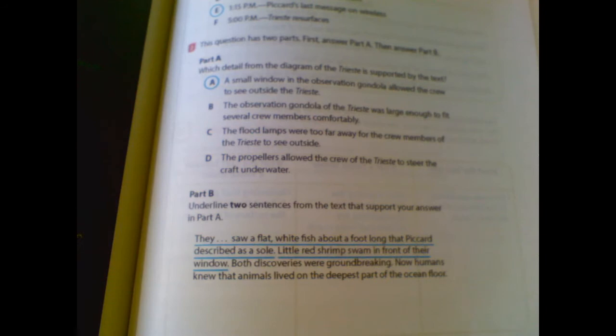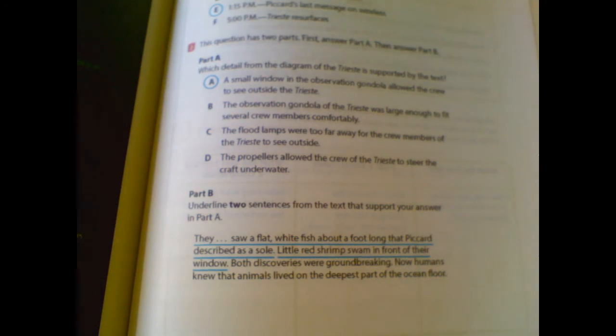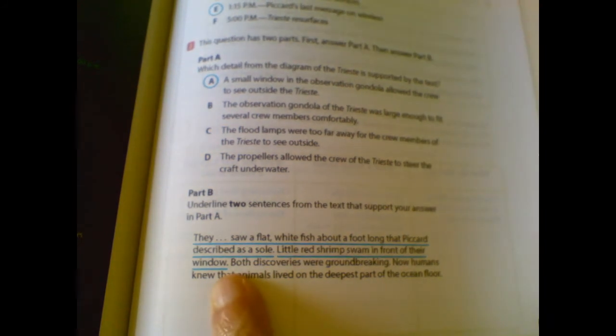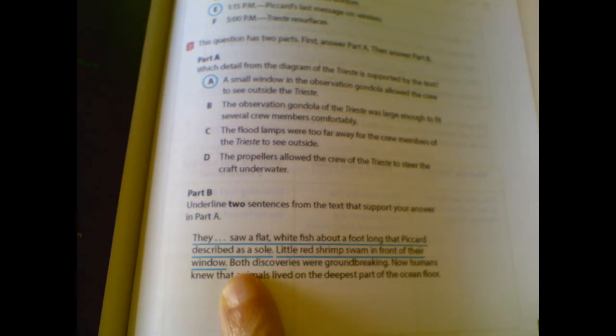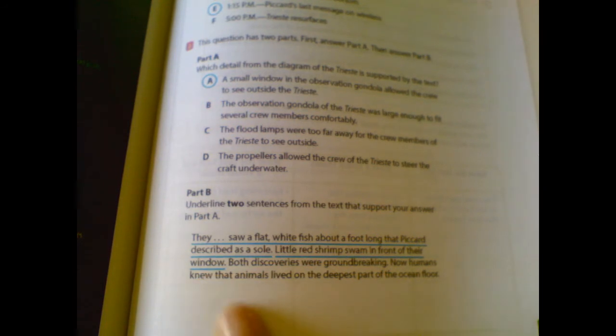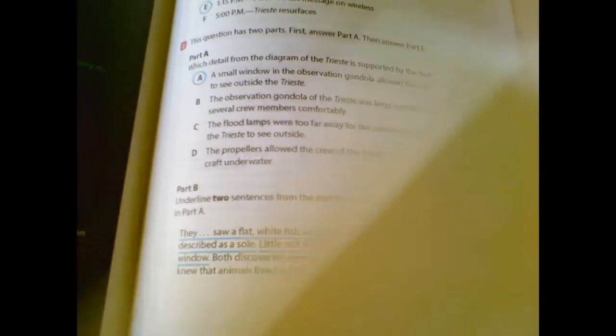Let's look at part B. Underline two sentences from the text that supports your answer to part A. So if I'm going back, I'm going to underline they saw a flat white fish about a foot long that Picard described as a soul, that's telling you what they saw from the little window, and little red shrimp swam in front of their window. So both of those sentences tells you that they could see out of their vessel.